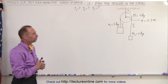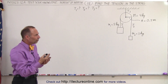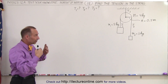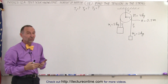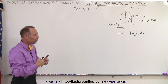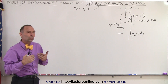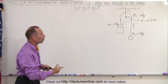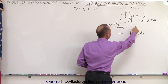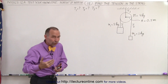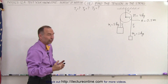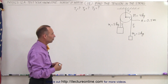So how do we do that? Well, the first thing we should do is find the acceleration of the system first, because after all, T1 and T2 are going to be mg plus or minus ma, and so therefore we need to know the acceleration.